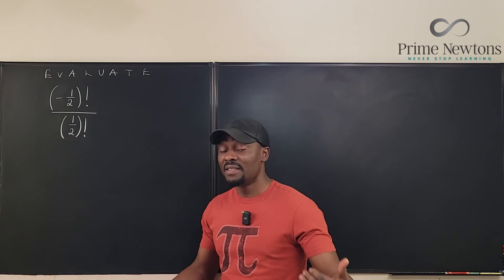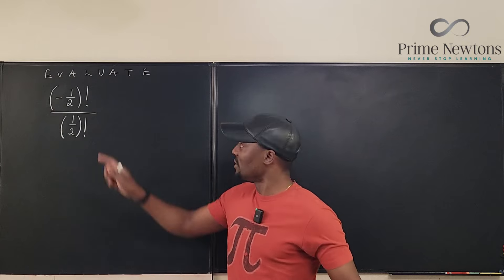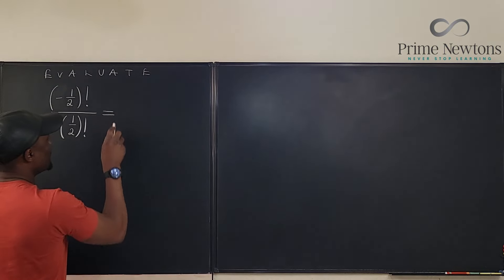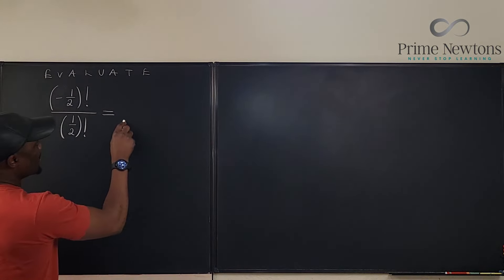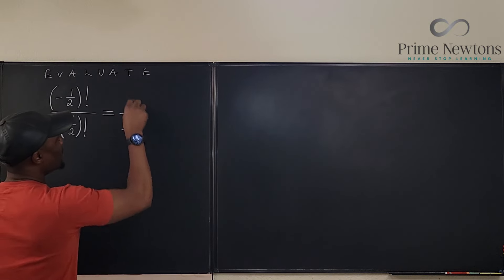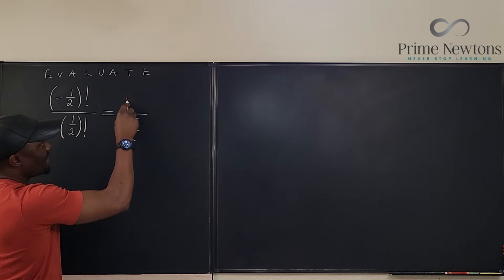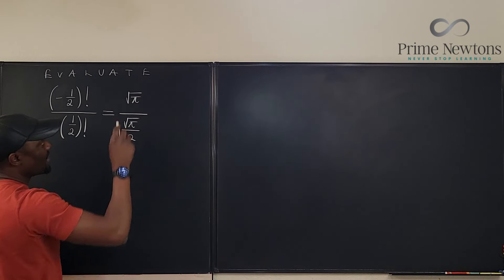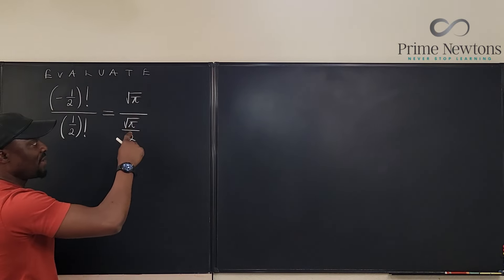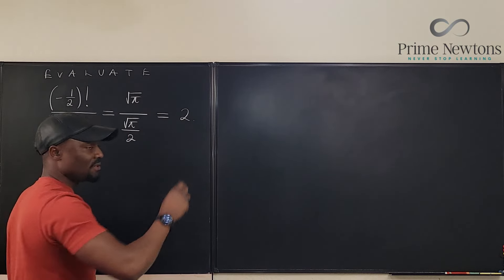As you saw in the thumbnail, the answer is 2. Since we already know what (1/2)! is, we can say this equals 2: the square root of pi over 2 is on the bottom, and the square root of pi is on top. So when you divide the square root of pi by the square root of pi over 2, your answer is going to be 2.